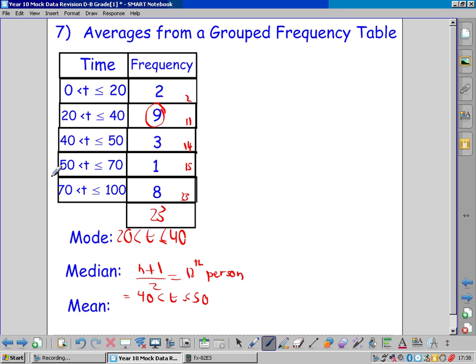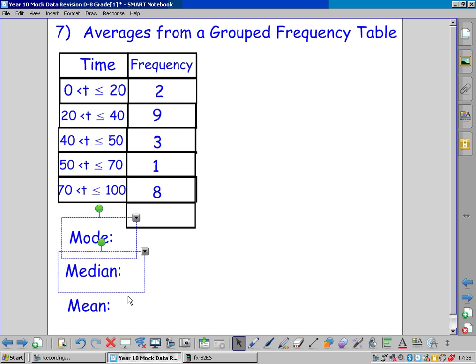The mean from a grouped frequency table is worth about 4 marks and requires a lot of working out. To find the mean, we need to know the total time for everybody, whatever they were recording. Now because we've got grouped data, it will only be an estimate.